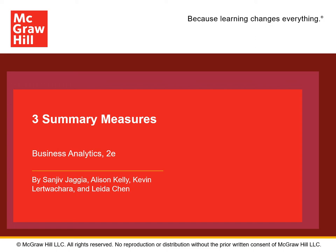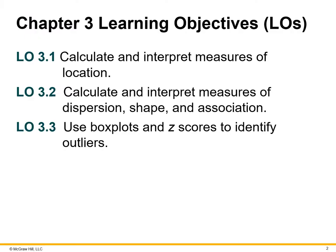Hello and welcome to Chapter 3 of Business Analytics on the topic of Summary Measures. The key learning objectives of this chapter are to calculate and interpret measures of location, measures of dispersion, shape, and association, and to get familiar with box plots and z-scores to identify outliers in data.